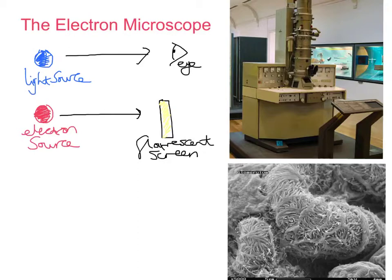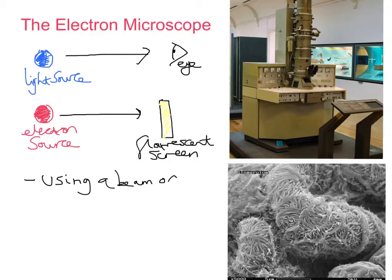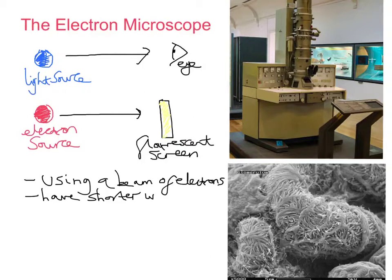Resolving power refers to the ability to distinguish two points that appear to be close together as separate. The greater the resolving power, the closer the points can be and still be distinguished as separate. So the first key things to note about the electron microscope: it uses a beam of electrons, and those electron beams have a shorter wavelength compared to light rays, giving it increased resolving power.